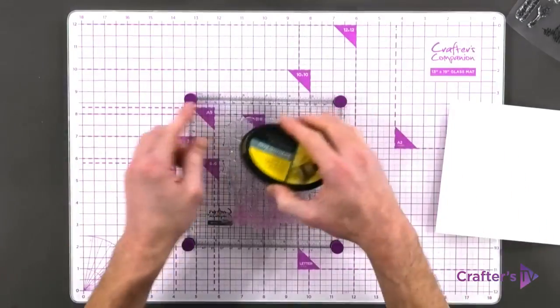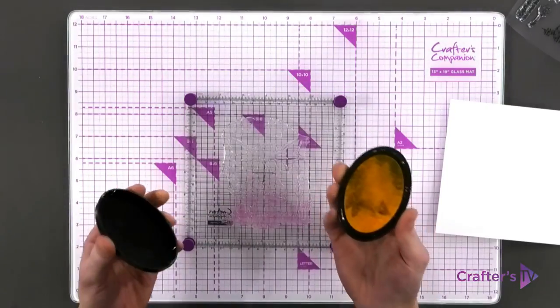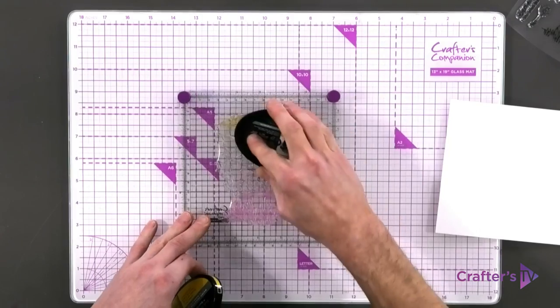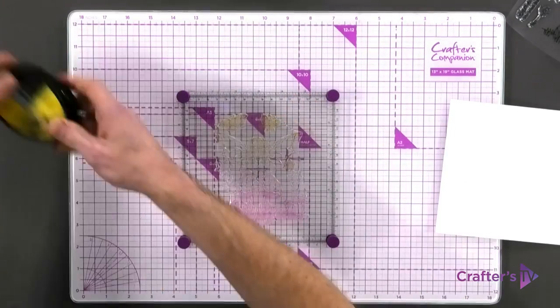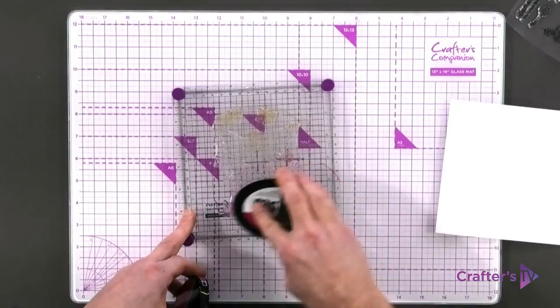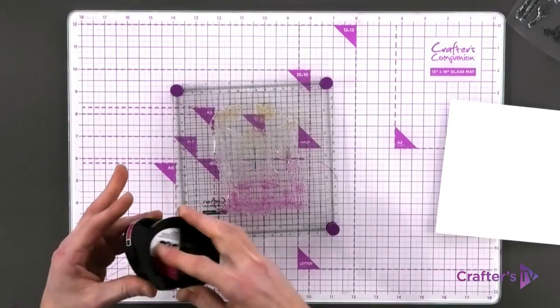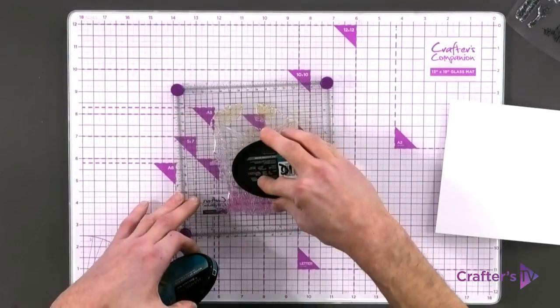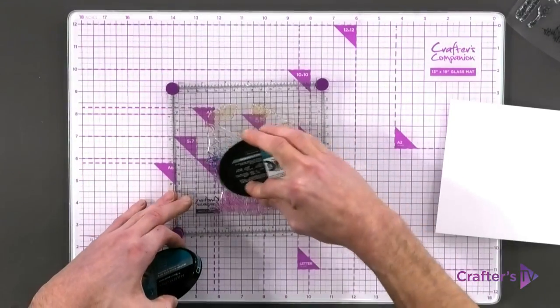I'm going to randomly stamp a few different areas. First the lighter yellow in a few places, then the Fuchsia along the bottom, and then the Parakeet towards the middle.